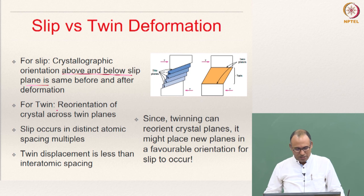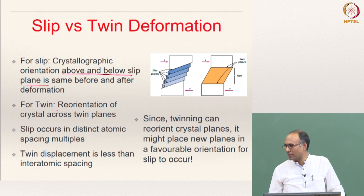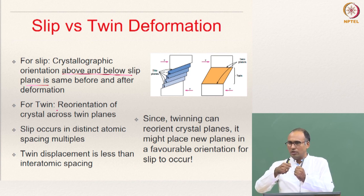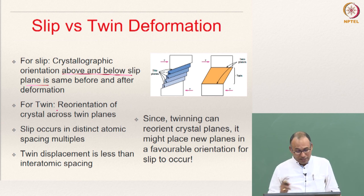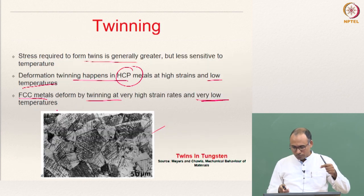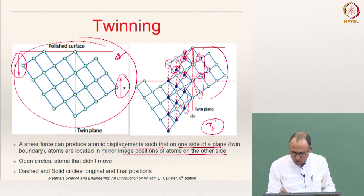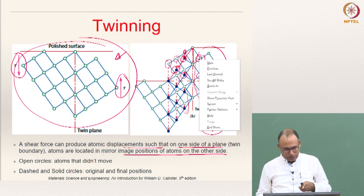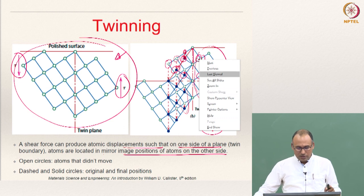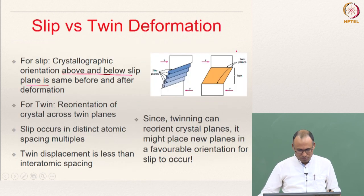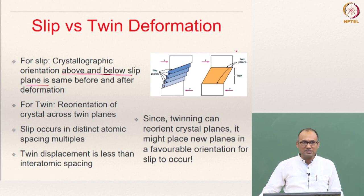Slip occurs in distinct atomic spacing multiples — only integer multiples of the Burgers vector, not 1.5b. Whereas in twinning, the displacement is usually less than the interatomic spacing. Each atom moves only a small distance to become the mirror image of its counterpart, so the twin displacement is less than the interatomic spacing.